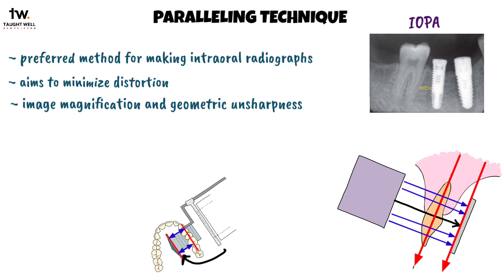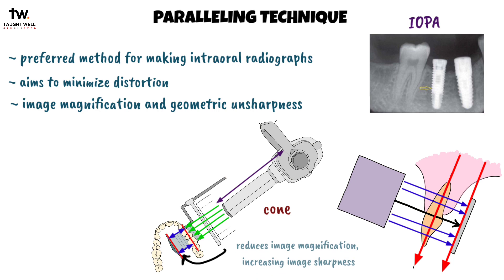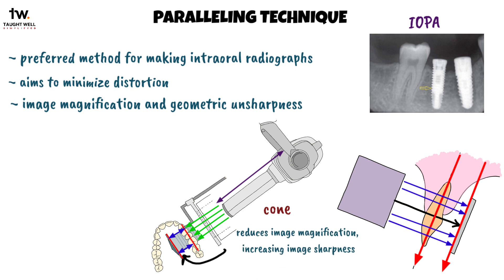To compensate for this magnification and unsharpness, we use a long open-ended aiming cylinder, also called a cone, to increase the source-to-object distance. This cone directs only the central and parallel rays of the beam to the image receptor and teeth, reducing image magnification while also increasing image sharpness.